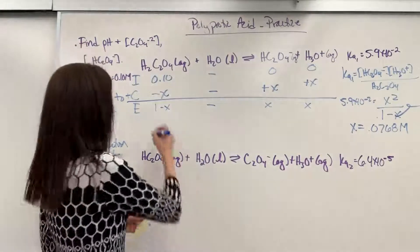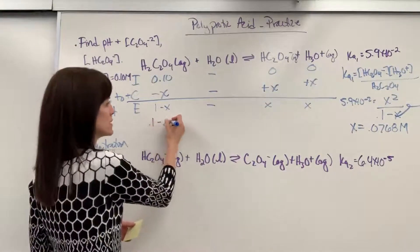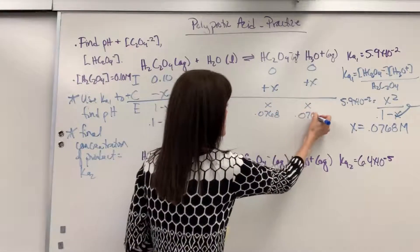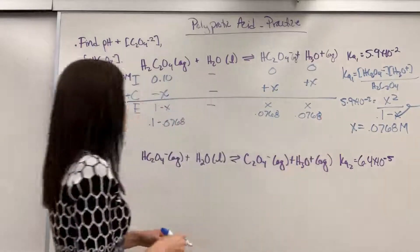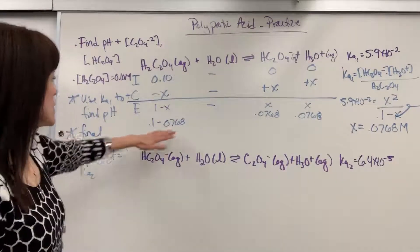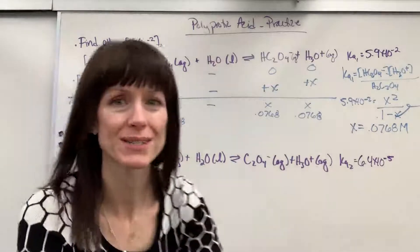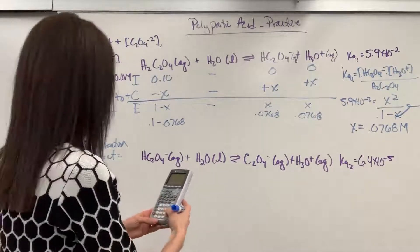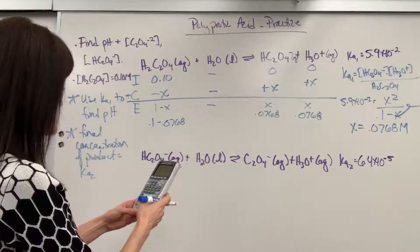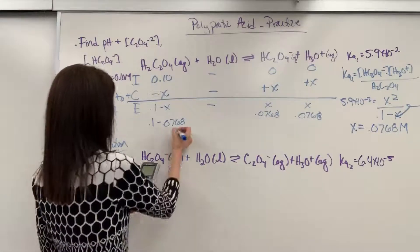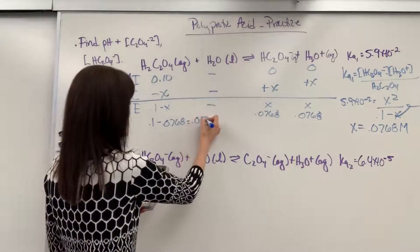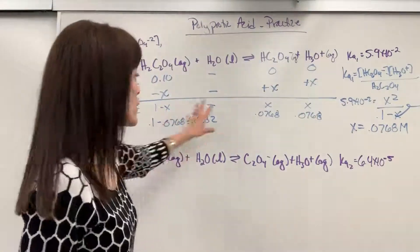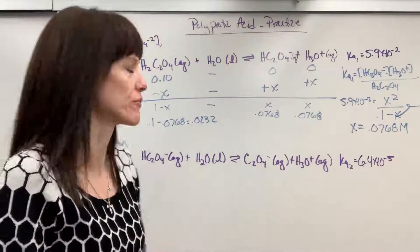Solving, we get X equals 0.0768 molar. Plugging back into the ICE table: the oxalic acid equilibrium concentration is 0.1 minus 0.0768, which gives 0.0232. The hydrogen oxalate and hydronium concentrations are both 0.0768. Now we can go to the second deprotonation.